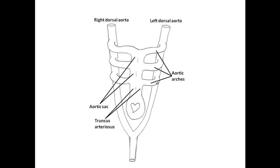The aortic arches are what actually form the gill arch blood supply in fish. These structures still form in humans and other mammals, but instead of being used for gills, they are put to work and morphologically changed to become the carotid arteries, the subclavian arteries, the aorta, and other associated structures in the upper mediastinum, proximal upper limb, and neck.